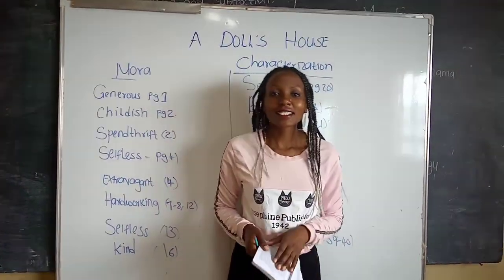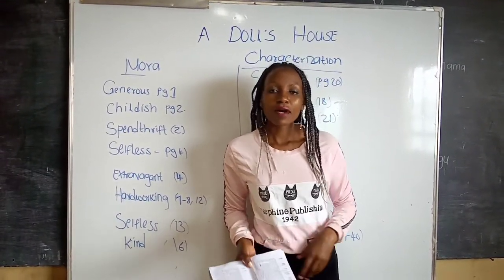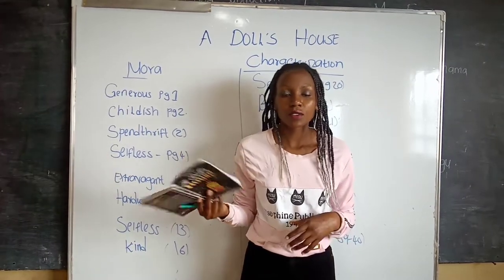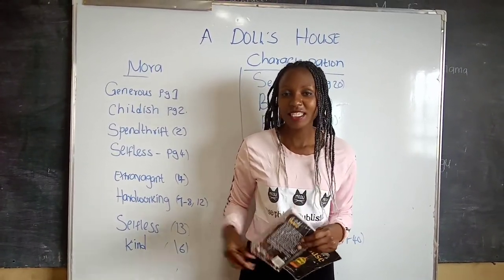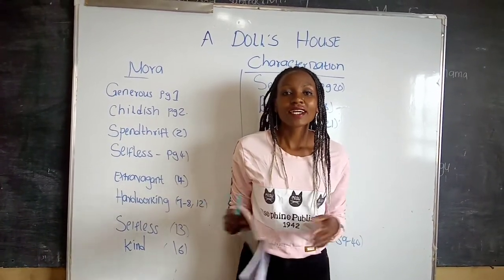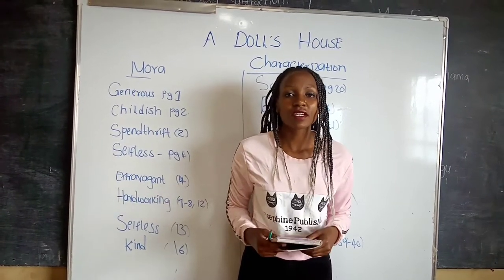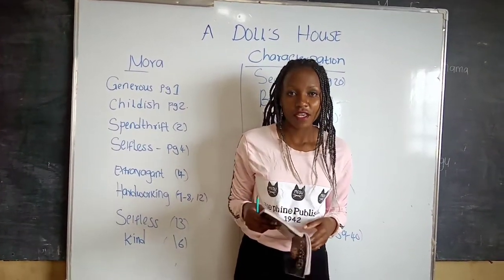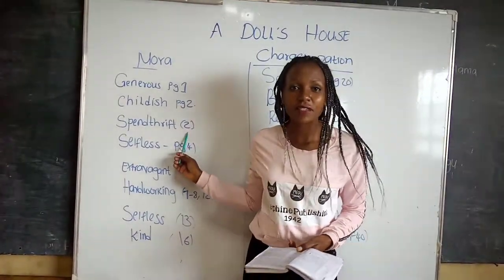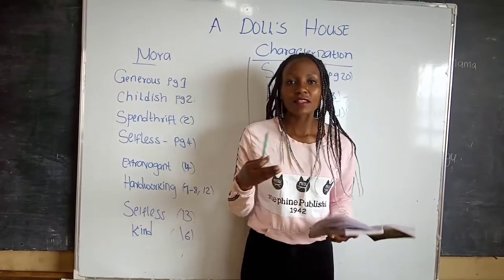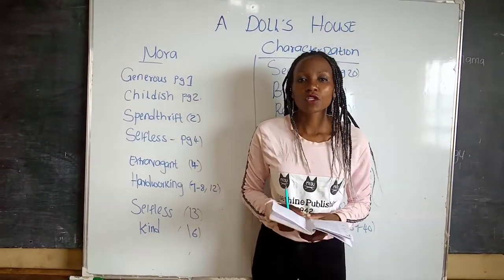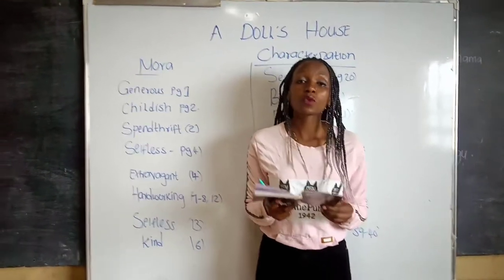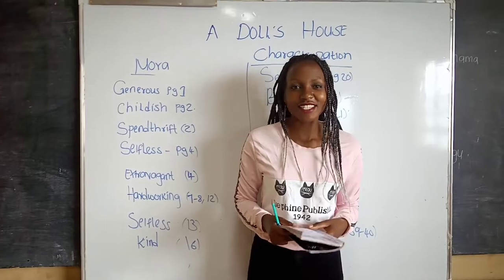Number two, she is childish and she is acting like a child. That is on page two, whereby she hides the macaroons in her pocket and eats them when the husband is not there. When she calls the husband to come, she hides the macaroons in her pocket again and wipes her mouth, just like a little kid would do when they are doing something that is not right. So look at page two, the stage direction, and you will see the trait there. The next one, she is a spendthrift — a person who wastes money. We learn this from Helmer, whereby he calls her a spendthrift: 'Has my little spendthrift been wasting money again?' So that shows that she is a spendthrift.